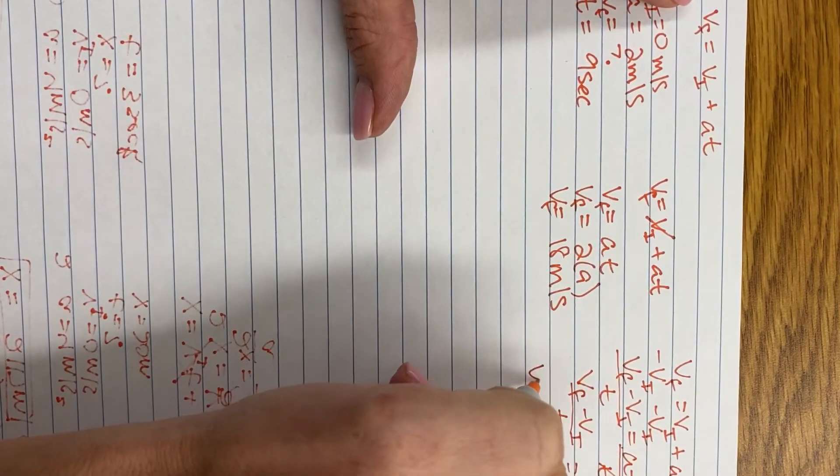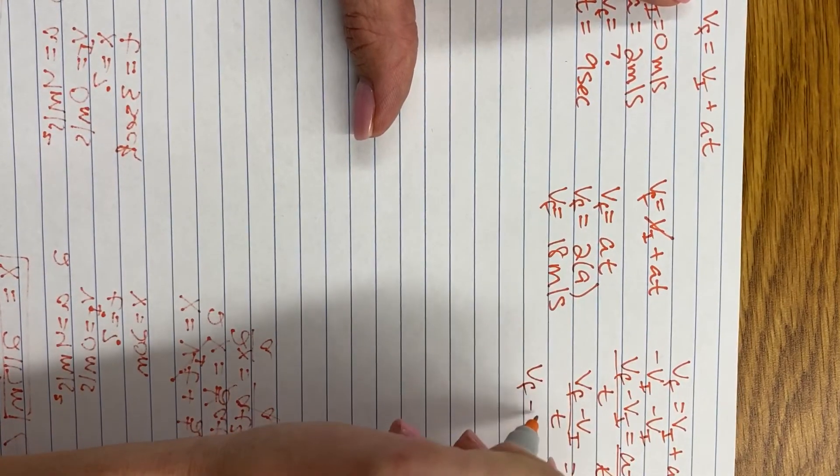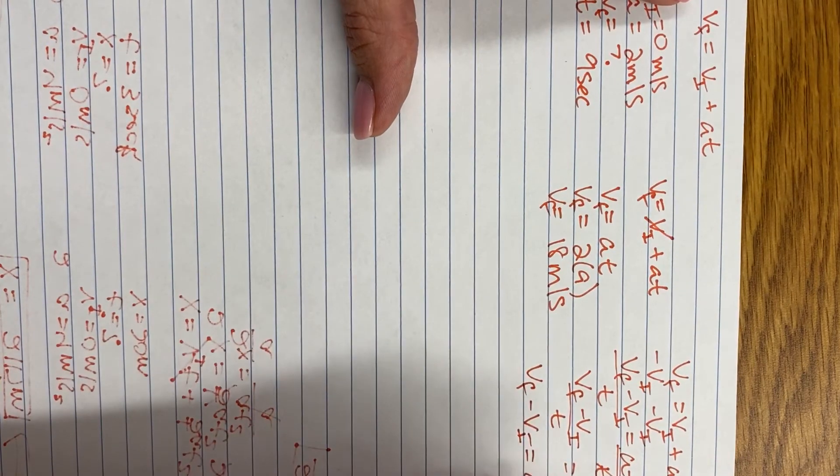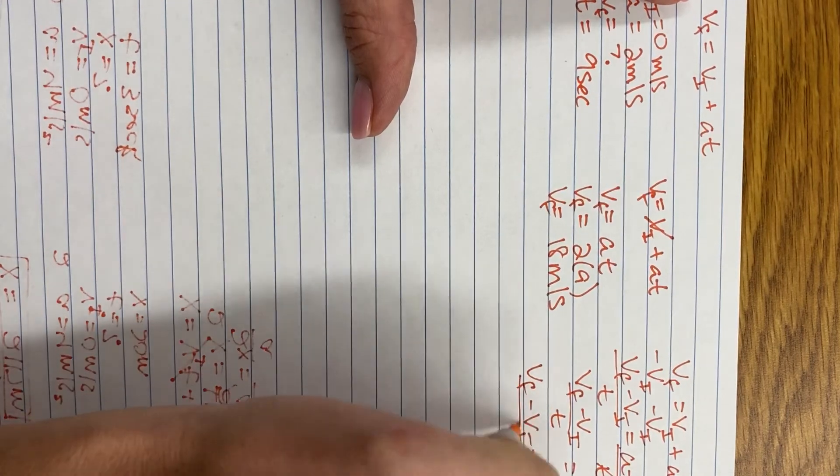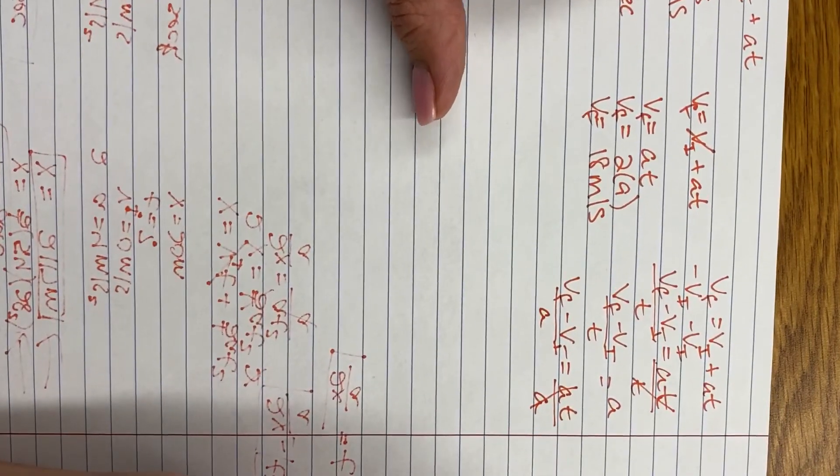Or with this equation that we had up here, if you wanted time, you would divide both sides by your acceleration to give you time.